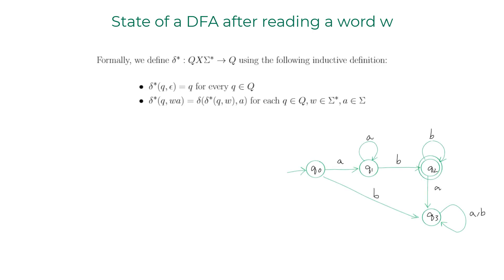I'll explain the inductive definition of delta star using an example. The base case: delta star of q comma epsilon — at any state, if you give it the empty string epsilon, it stays at that same state. The inductive step: delta star of q comma wa (where w is a word and a is a character from the alphabet) can be rewritten as delta of delta star of q comma w, comma a.